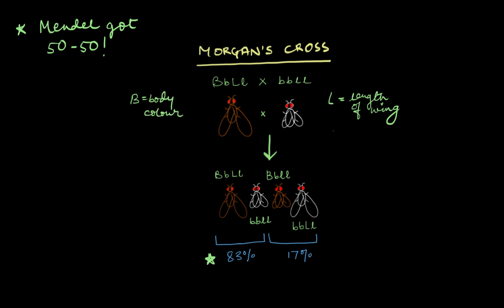Morgan and his team, including Sturtevant, were working on a fruit fly cross involving two major genes — one controlling body color and the other controlling wing length. This cross stumped Morgan's entire team because, unlike Mendel's perfect 50/50 population, Morgan got a fruit fly population in which about 83 percent of offspring looked exactly like the parents while only 17 percent were hybrids. Eventually they figured out this was due to something called linked genes.